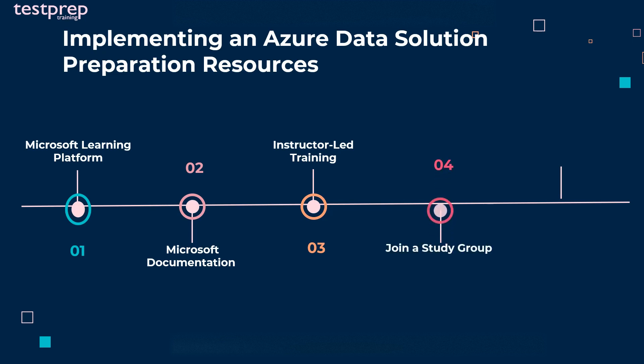Fourth, join a study group. For passing the DP200 exam, the candidate needs to get and share knowledge. We suggest joining a study group where you can discuss concepts with people who share the same goal, which will guide the candidate throughout their preparation. Fifth, practice test — the most important step is to try your hands on practice tests, which ensure the candidate about their preparation. There are many practice tests available on the internet, and the candidate can choose whichever they want.